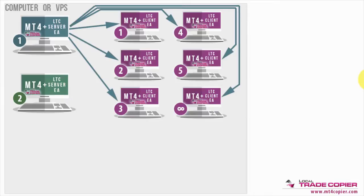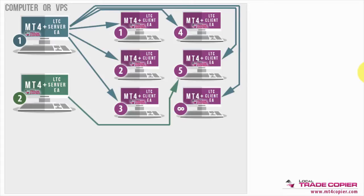Now let's make the setup more advanced. I get another MetaTrader account which will also act as a master, with a server EA installed. The only thing I need to change is the group setting for that server EA — creating another group of trades. I link this master account number two to copy trades only to MetaTrader client account number five, as an example. So master number one copies trades to all client accounts, but master number two copies trades only to client number five.